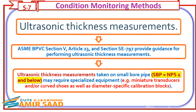Condition monitoring methods using UT and RT: ASME B&PVC Section V, Article 23 and Section SE-797 provide guidance for performing ultrasonic thickness measurements. Ultrasonic thickness measurements taken on small bore pipe may require specialized equipment — for example, miniature transducers and/or curved shoes as well as diameter-specific calibration blocks.